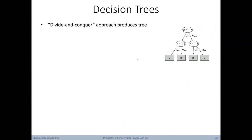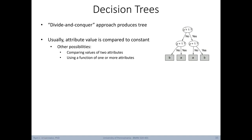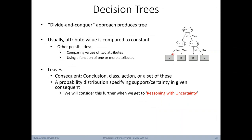From this point, we're going to think about decision trees from the perspective of machine learning — trying to train a tree from scratch rather than hardcoding one with expert knowledge. Training trees takes a divide-and-conquer approach: we start by picking the best root node possible, finding an attribute that best allows us to split up the instances in our dataset. Commonly, the test of a node could be an attribute value compared to a constant, for example x equals 1. You could also compare the values of two attributes, or use a function of one or more attributes as the test. Leaves represent the consequent and can output a conclusion, a class, an action, or some set of these. When it comes to classification, these consequences represent a probability distribution specifying the support or certainty of a given class outcome.